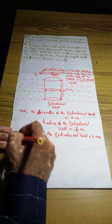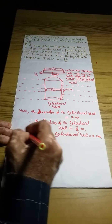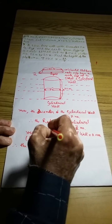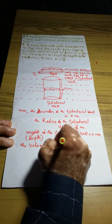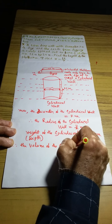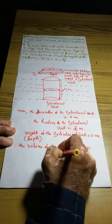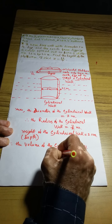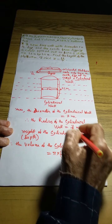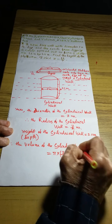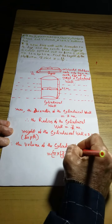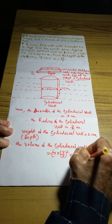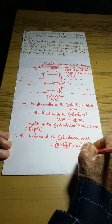We can now find the volume of the cylindrical well. Therefore, the volume of the cylindrical well is equal to π × (7/2)² × 20 cubic meters. Let us name this relation as equation (1).